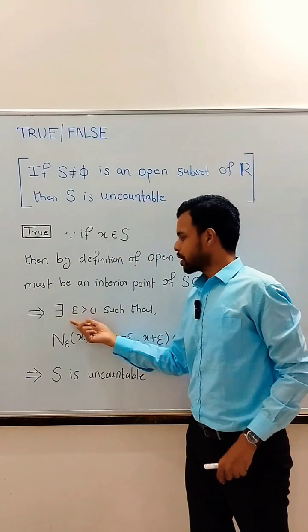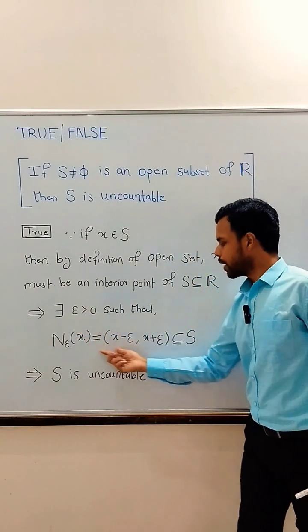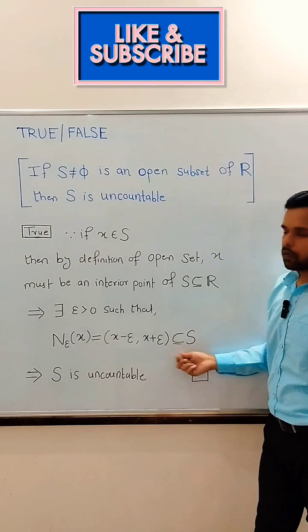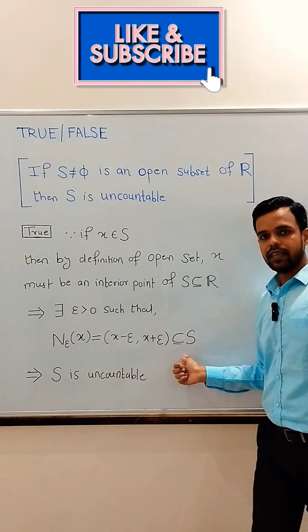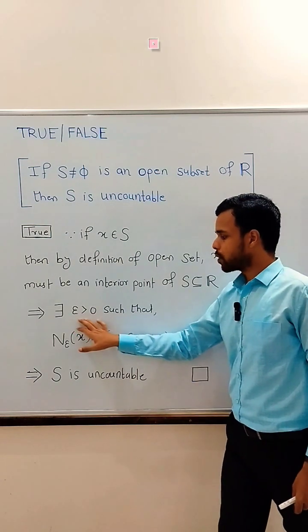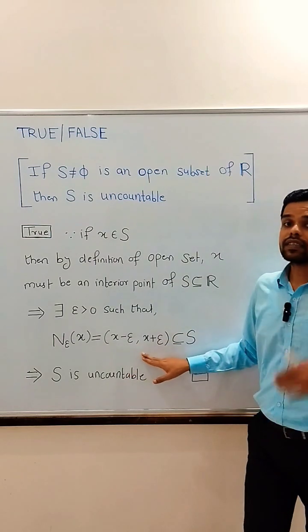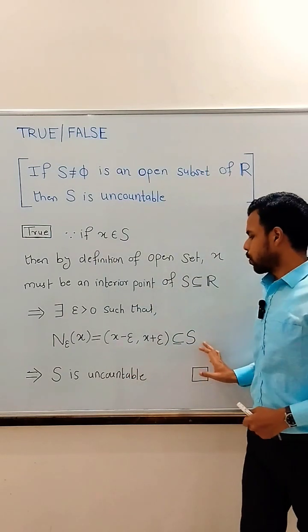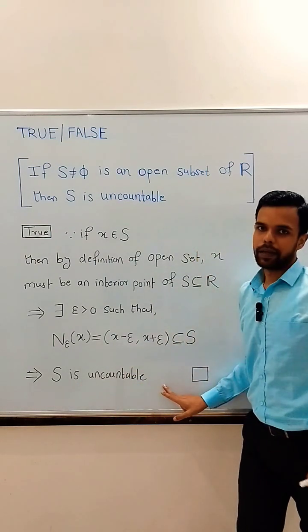So there exists an epsilon greater than 0 such that the open interval (x - epsilon, x + epsilon) is contained in S. And as we know that for every epsilon greater than 0, this open interval contains uncountably many real numbers. So we conclude that S is uncountable.